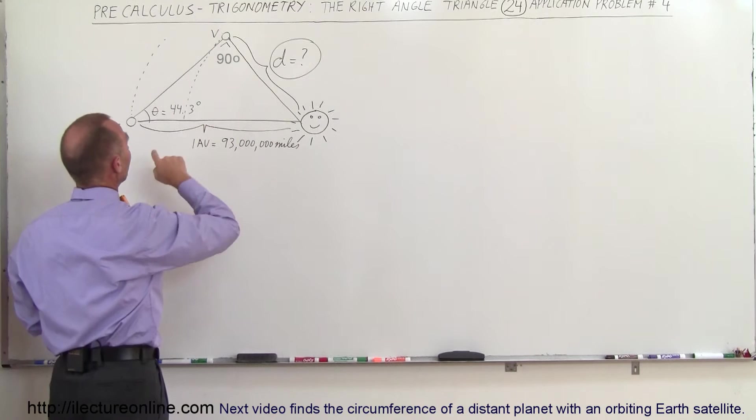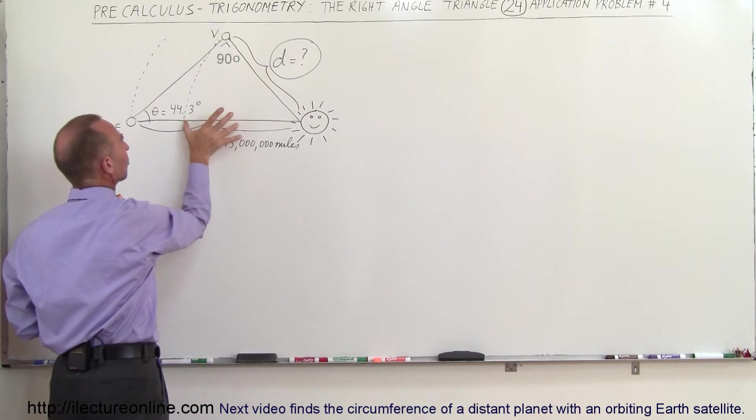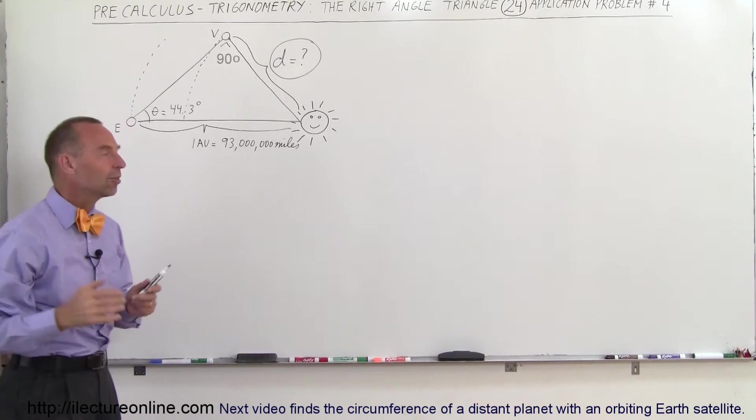Here we can see that we want to find, let's see, we have the hypotenuse of the triangle, there's the right angle. Remember the hypotenuse is always directly across from the right angle. Here's the angle theta and there's the opposite side. So we're looking for the opposite side.